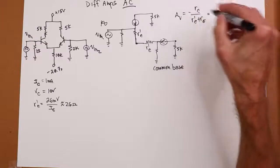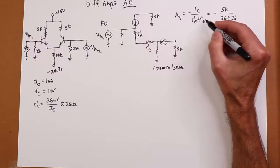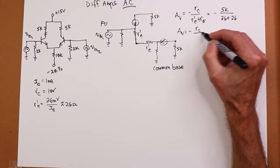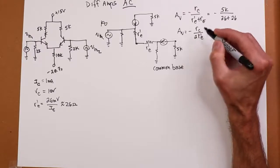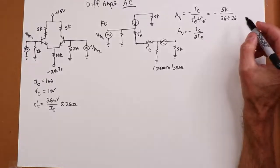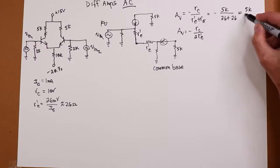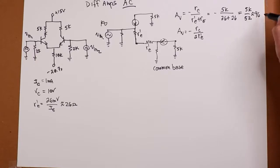When we calculate the gain, the general gain equation is negative RC over (R'E + RE) for a swamped case. Here RC is 5K, R'E is 26 ohms, and RE — the emitter impedance looking into the second transistor — is also 26 ohms. Since both R'E values are equal, we can write this as negative RC over 2R'E, or equivalently negative one-half times RC over R'E. So we get 5K over 52 ohms, which is just under 100 — roughly 96.